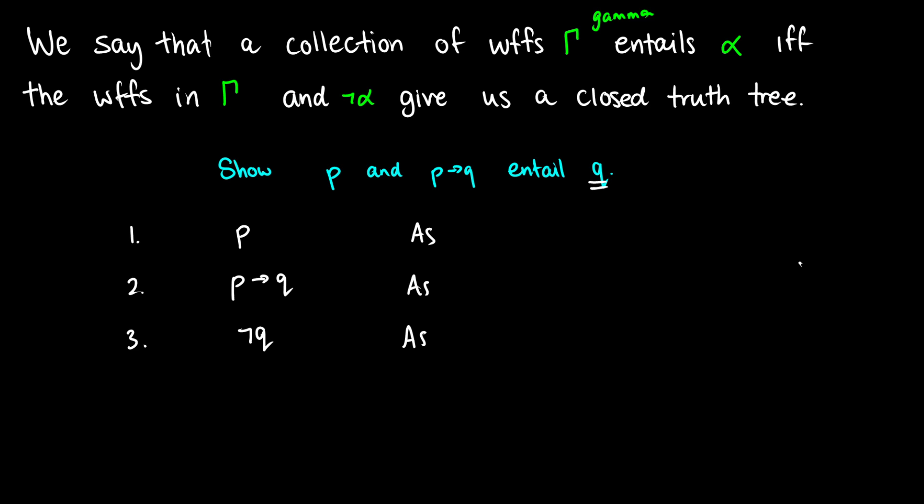And what we do is we have two branching paths for p arrow q for arrow decomposition. We'll either have that not p is true or q is true. So this will be line 4. This is arrow decomposition from 2. And both of these will close because we have a contradiction with not p and p, and we have a contradiction with q and not q. So because everything there has closed, we know that this is entailment. Or we can say that these sets of well-formed formulas are valid. So it expresses validity.